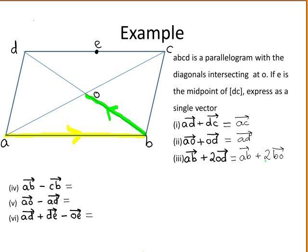So we have vector AB plus twice vector BO. Twice vector BO is the vector going in the same direction but twice as long, which is vector BD. So this becomes vector AB plus vector BD. Now we can add these again using the triangle law, and the answer is the vector AD.